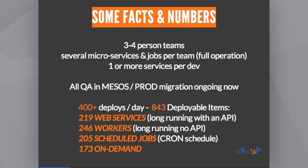Some numbers to give you context. Today we run all our QA in a Mesos cluster, and we have already gradually started moving our production system to a new Mesos cluster. We deploy about 400 times per day, about 150 times in the production environment, and we have close to 800 deployable items. The current mix is 220 web services — the APIs composing the product — about 250 workers (for example, processes that consume Kafka queues), almost 200 jobs that process Hadoop data and create materialized views in HBase, and a few on-demand jobs we manually initiate to move files around, migrate databases, and clean up log files.